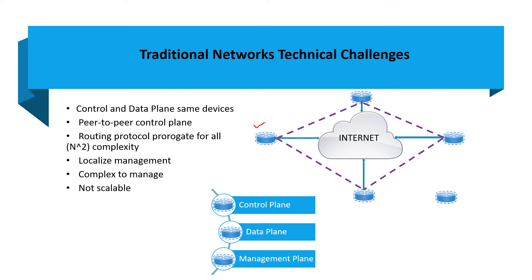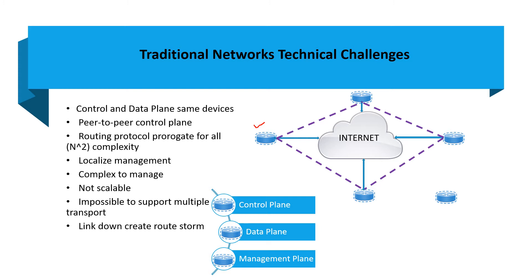Scalability is going to be a limitation, and it is almost impossible to support multiple transports. Whenever you have a link-down scenario, you are going to see routing issues across the network. Looking at the diagram on the right-hand side, you have four routers — marked one, two, three, and four in red — with internet connectivity where you want to do some sort of IPsec or GRE.